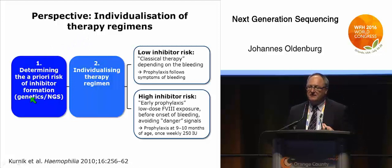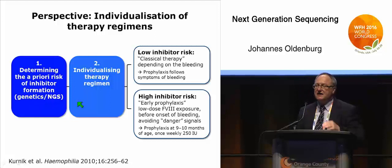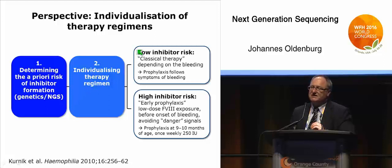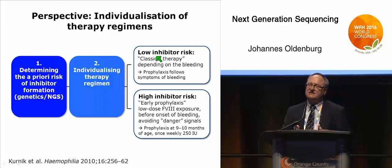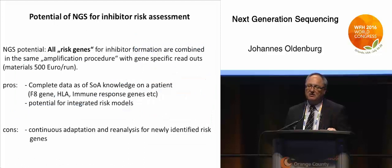It would be ideal if we could determine the genetic risk by next generation sequencing and then individualize the risk for patients. Those with a low risk would follow a classical regimen, while those with a high inhibitor risk may be directed to specific regimens where lower risk of inhibitor formation is expected—for example, a very low dose of factor VIII. Several hypotheses exist around this, but what we need are very good genetic information and risk models.